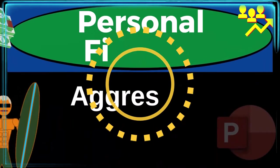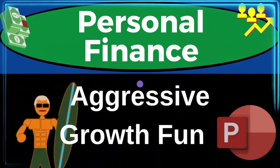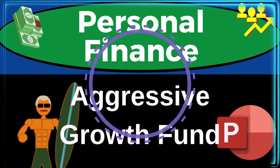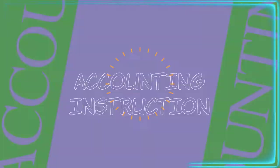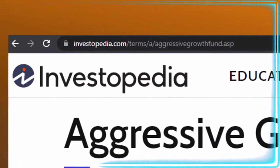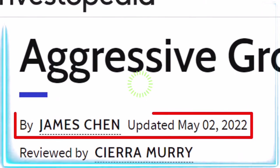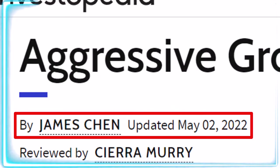Personal Finance PowerPoint Presentation: Aggressive Growth Fund. Prepare to get financially fit by practicing personal finance. Most of this information comes from Investopedia, which you can find online. Take a look at the references and resources to continue your research from there. This is by James Chen, updated May 2nd, 2022.